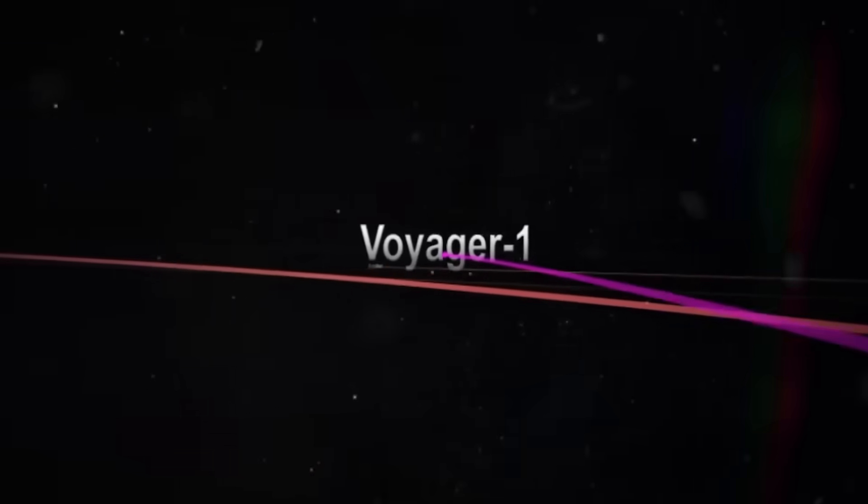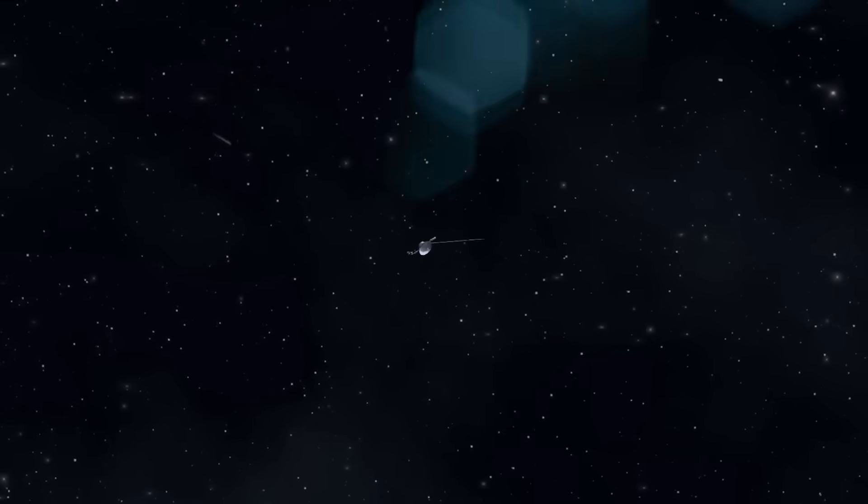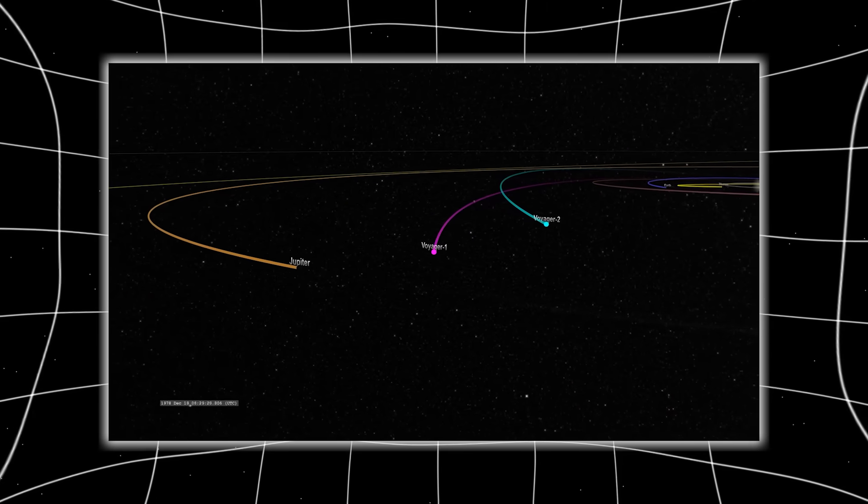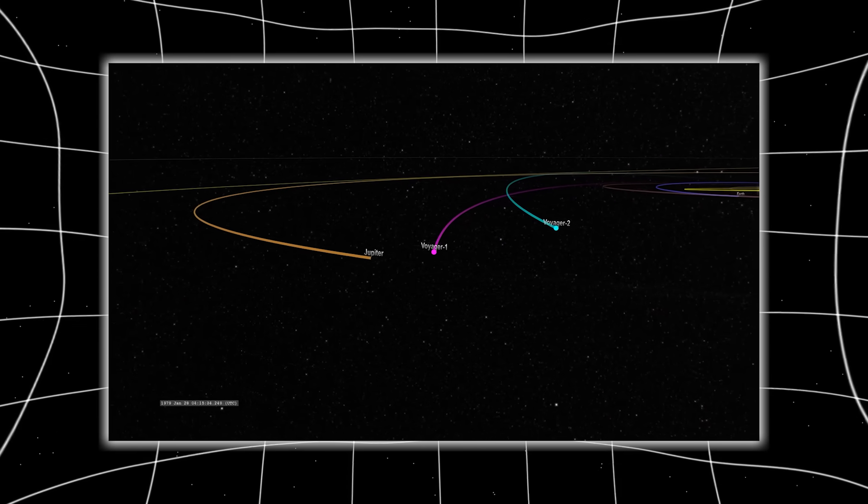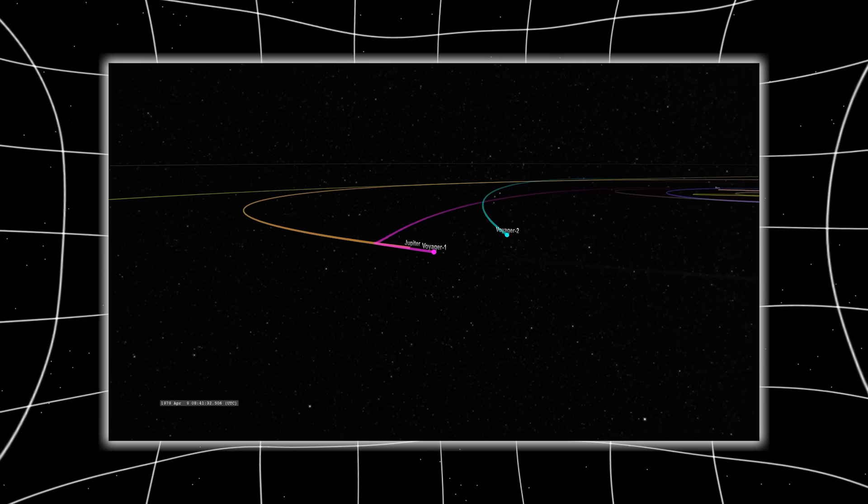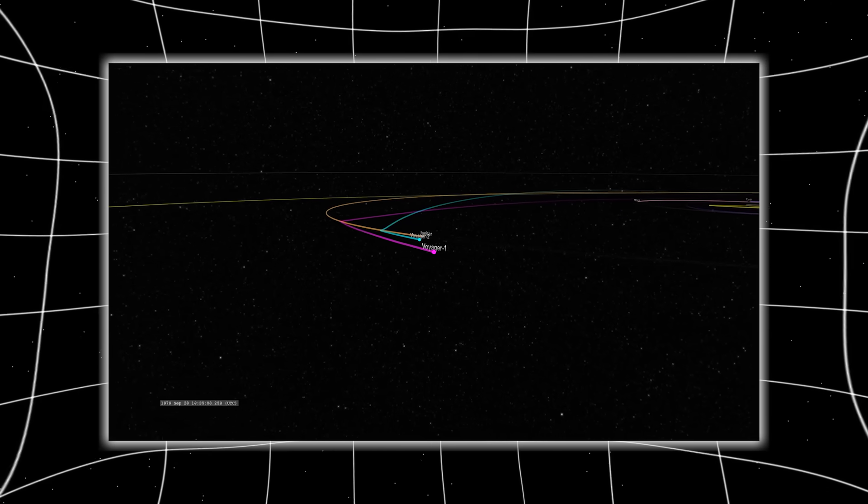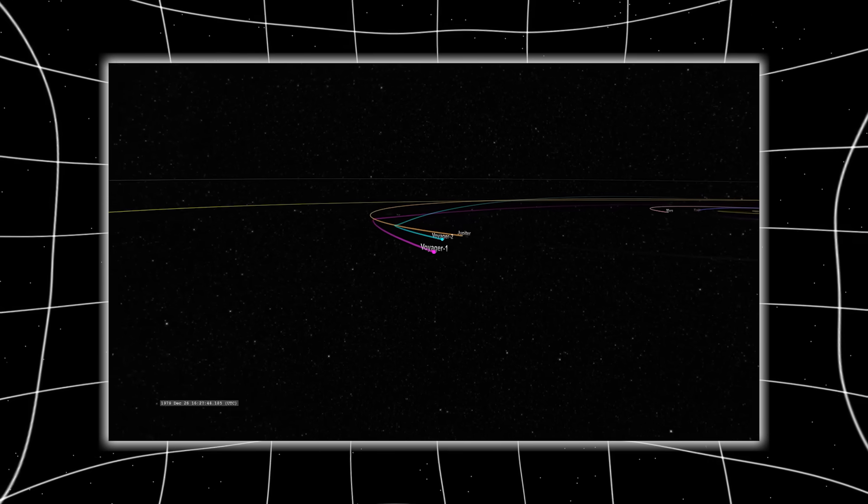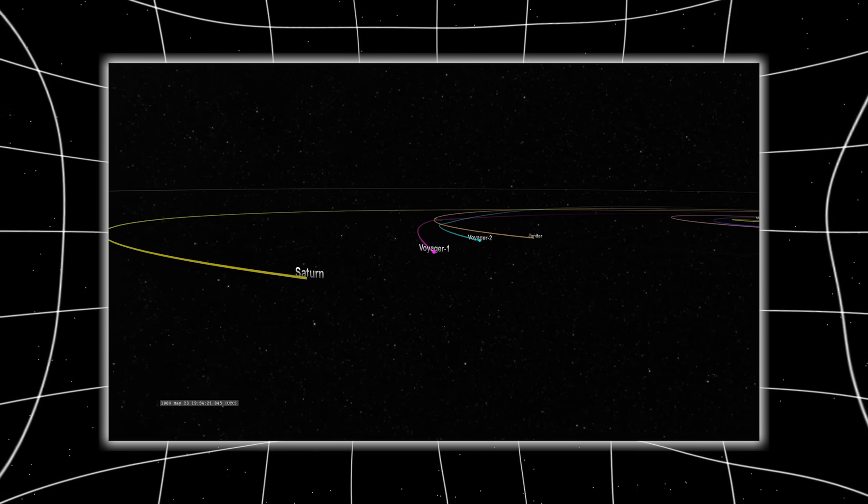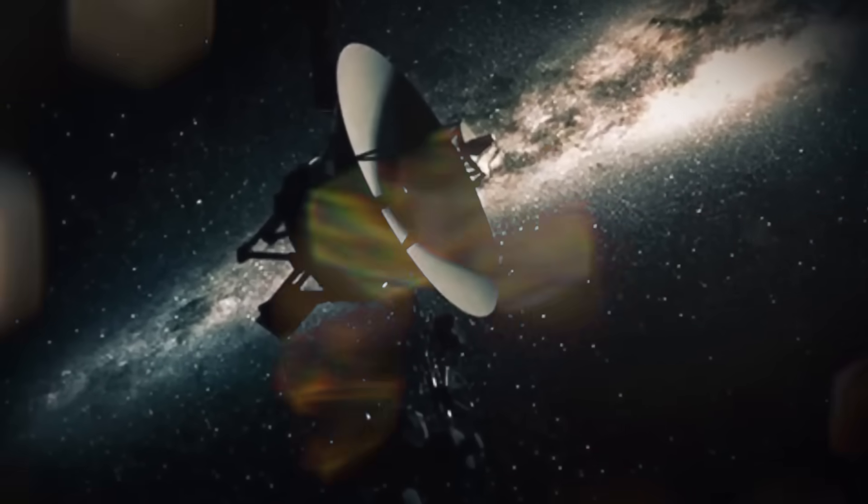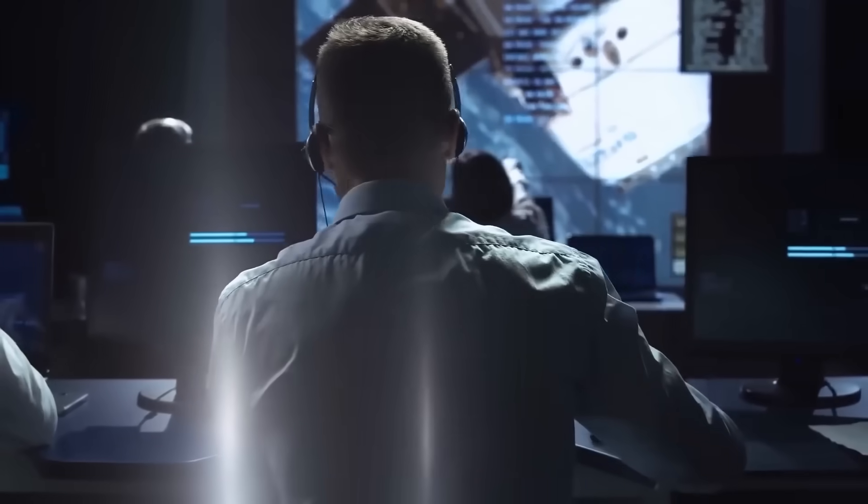Then came the final shock. Voyager 1 shifted course. Not a drift. Not an anomaly. A controlled, deliberate arc. A turn. Not back to Earth. Not toward a star. But into a region with no known mass. No gravitational pull. No celestial body to explain the change. Engineers confirmed it. Voyager 1 had executed a maneuver it wasn't programmed to perform. With no active propulsion. No command sent. The turn wasn't random. It aligned with the pulsar grid received days before. A precise angle down to the decimal.